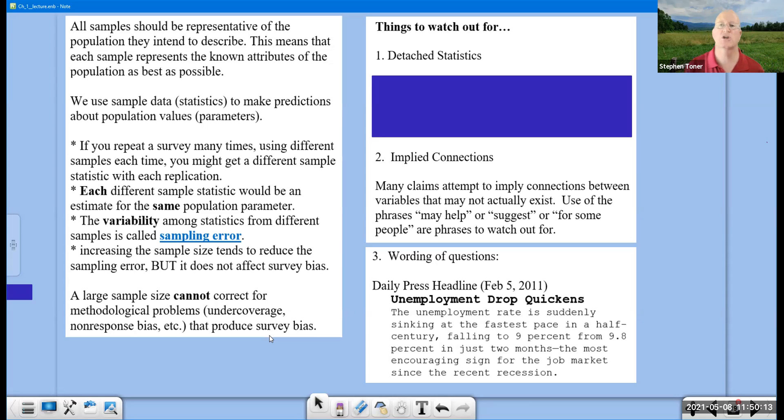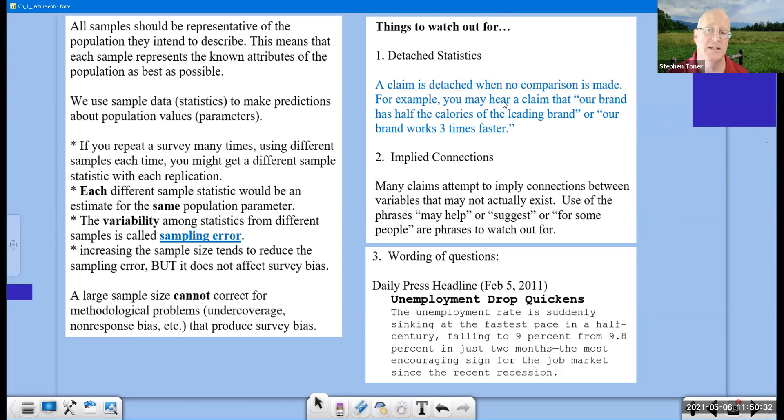My next section is to help educate you about ways that you can be manipulated, ways that people lie with statistics. The first one's called a detached statistic. A claim is detached when no comparison is made. You may hear a claim that says our brand has half the calories of the leading brand, or our brand works three times faster. Three times faster than what? There's no connection made. Anyone can say that their brand is better or works faster, but unless you attach it to something, it's not a worthwhile comparison.